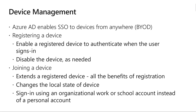Registering a device to Azure AD enables you to manage a device identity. When a device is registered, Azure AD device registration provides the device with an identity — similar to a user identity — that is used to authenticate the device when a user signs in. You can use that identity to enable or disable the device. The second option, joining a device, is an extension of registering. It provides all the benefits of registering, and in addition it changes the local state of the device, enabling the user to sign in using their organization or school account instead of a personal account.